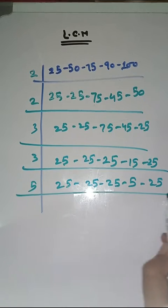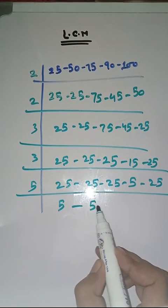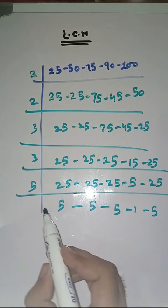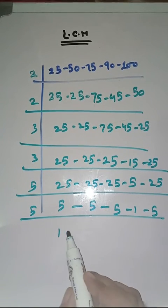Now with 5. 5 5's are 25, 5 5's are 25, 5 5's are 25, 5 1's are 5, 5 5's are 25. Again with 5, 5 1's are 5.